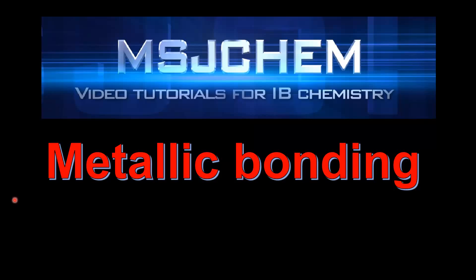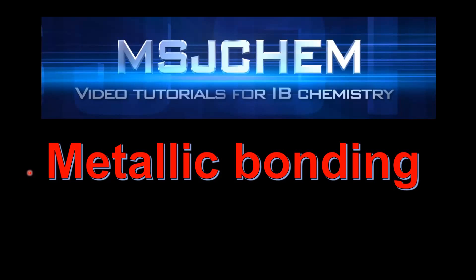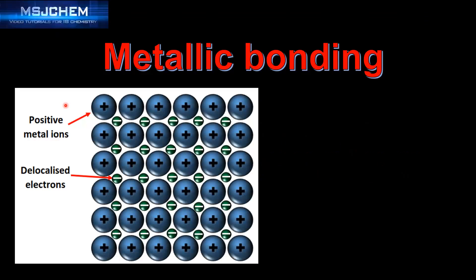This is MSJChem and in this video I'm going to look at metallic bonding. Let's start by looking at the structure of a metal. The structure of a metal is composed of positive metal ions surrounded by a sea of delocalized electrons.